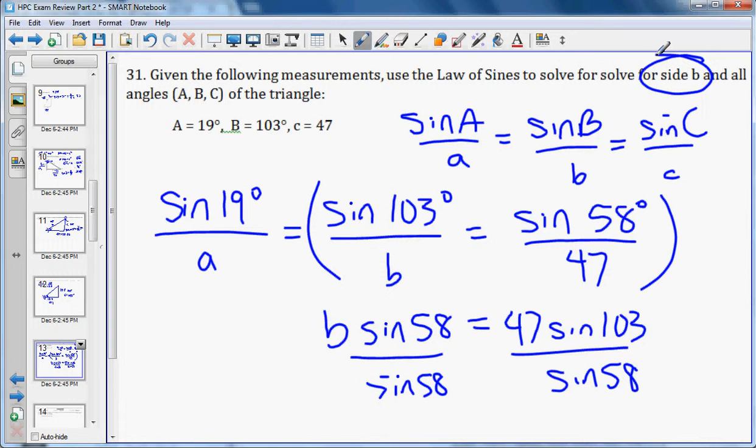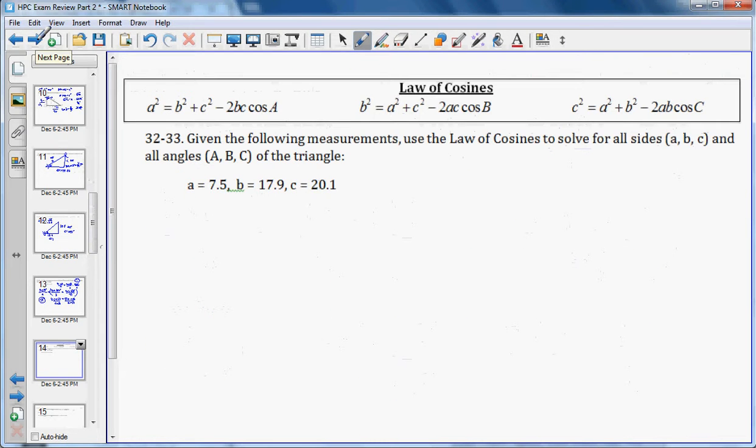Now we do the law of cosines. Given the following measurements, use the law of cosines to figure out all the sides and all the angles. Well, if you notice, they give us all three sides. So we're going to have to figure out all three angles. Remember, if they give you all three sides, you need to solve for the biggest angle first. And the biggest angle always goes with the biggest side. So that tells me to use this version. I'll do 20.1 squared equals 7.5 squared plus 17.9 squared minus 2 times 7.5 times 17.9 cosine of C.